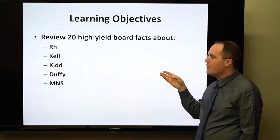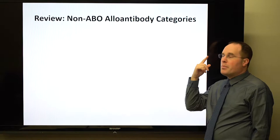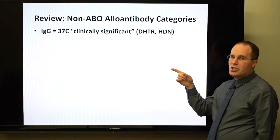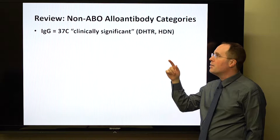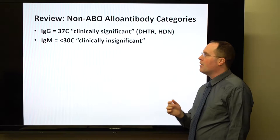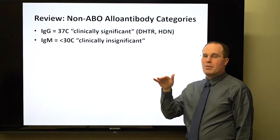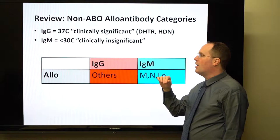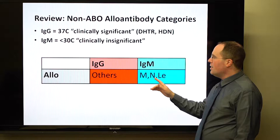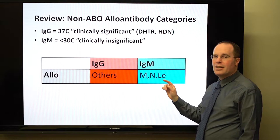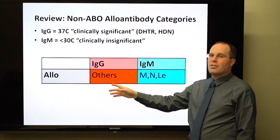As a broad overview, among our non-ABO alloantibodies, you can have IgGs that are generally clinically significant because they bind at 37 degrees (body temperature) and can cause delayed hemolytic transfusion reactions and hemolytic disease of the newborn. You can also have IgMs that generally bind at room temperature or lower and are generally clinically insignificant. The main IgMs we worry about are anti-M, anti-N, anti-Lewis-A, and anti-Lewis-B. Most other antibodies — RH, Kell, Kidd, Duffy, and big S/little s — are IgG.